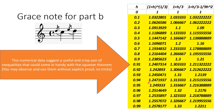I am giving you some numerical data here. Here are values of h, values of 1 plus h to the 1 third, values of 1 plus h over 3, and values of 1 plus h over 3 minus 1 over 9 h squared. This numerical data suggests a useful and crisp pair of inequalities that could come in handy with the squeeze theorem. You may observe and use these inequalities without explicit proof. No tricks here.